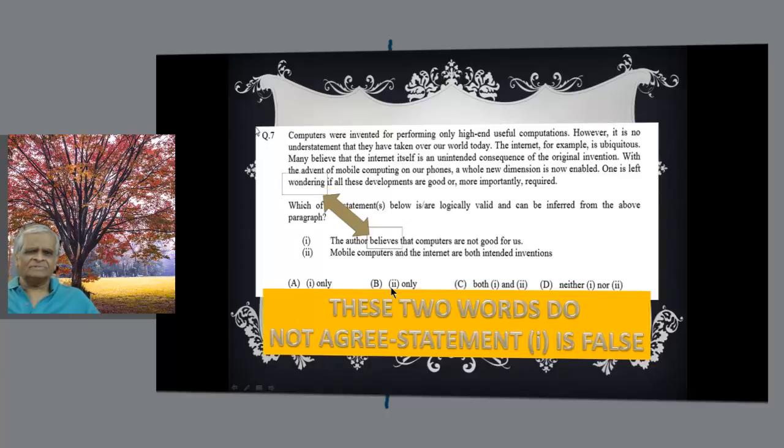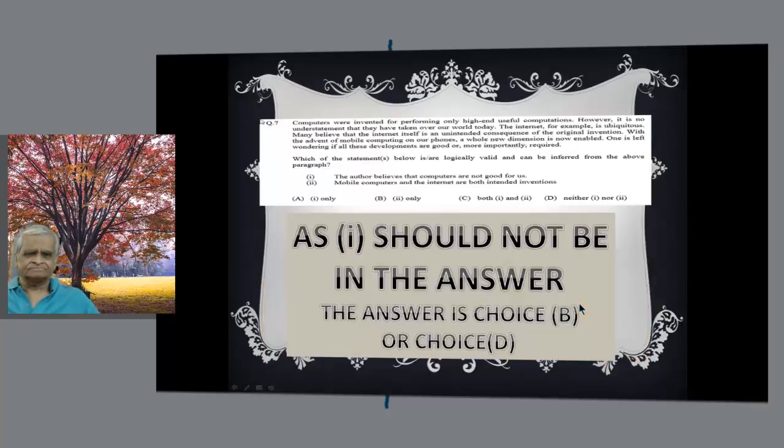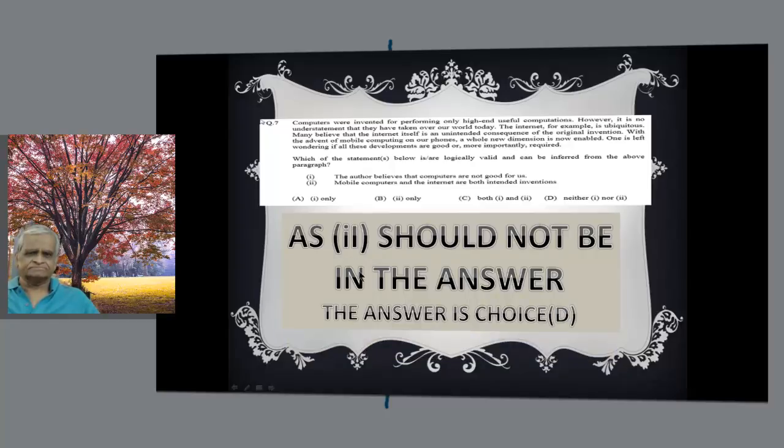We are left only with B and D. We have to choose between B and D. So answer is either choice B or choice D, and one should not be there in the answer. So everything depends upon 2 now.